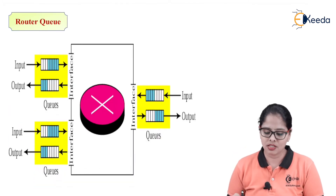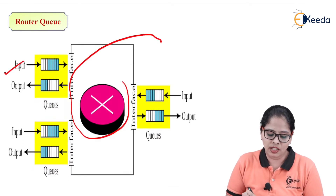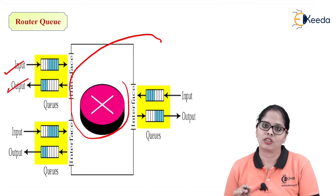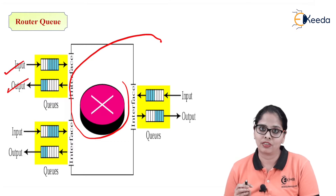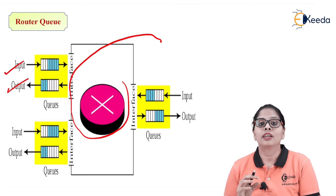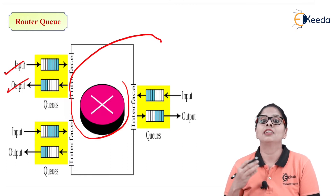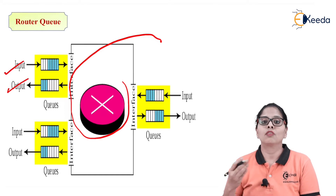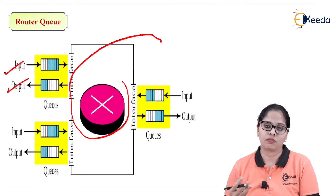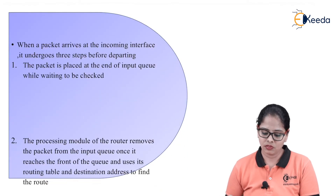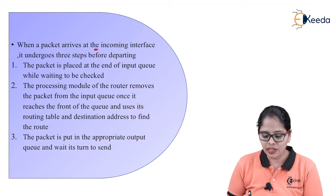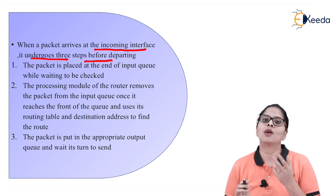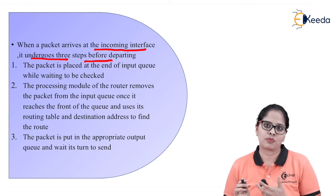In a router there are input and output queues. Whenever a packet comes to the router, it is first stored in the input buffer. The router then takes the packet from the buffer, processes it by checking the routing table, and puts it into the outgoing queue. All this processing takes some time. When a packet arrives at the incoming interface, it undergoes three steps before departing.